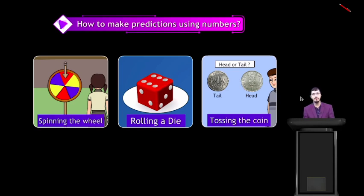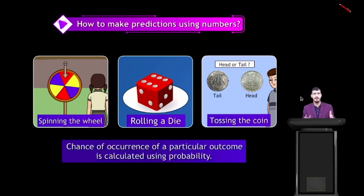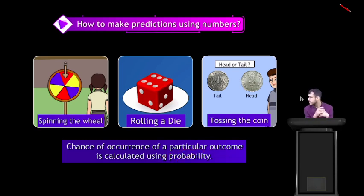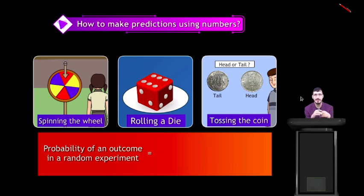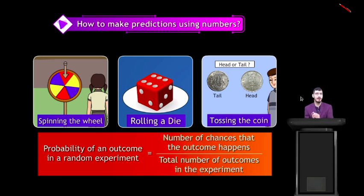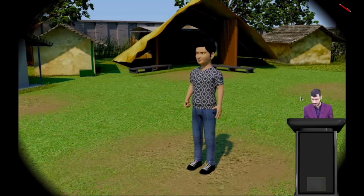Now let us move to another part — how to make predictions using numbers. Chance of occurrence of a particular outcome is calculated using probability. The formula of probability of an outcome in a random experiment is: number of chances that the outcome happens divided by total number of outcomes in the experiment.